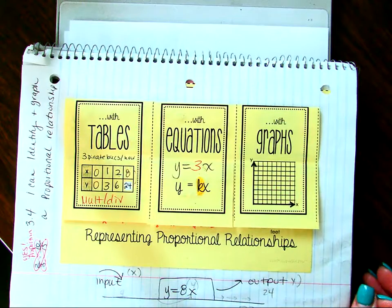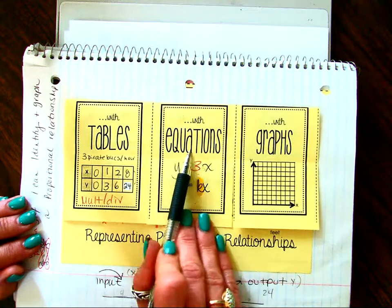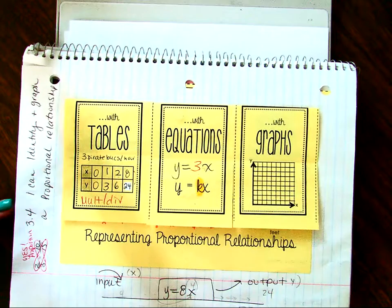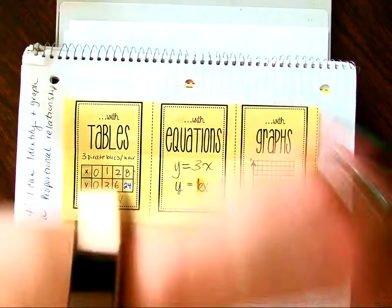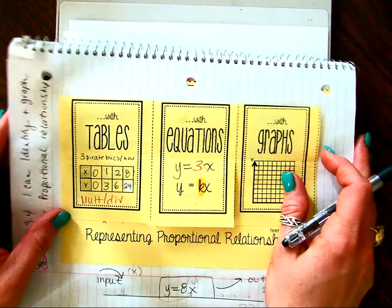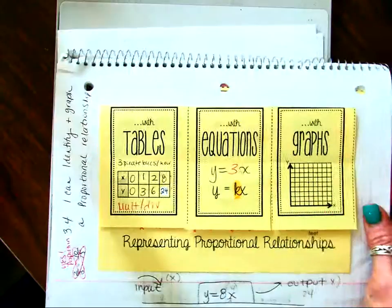In addition to a table and an equation and a graph, I'm going to add words. So a table, an equation, a graph, and words, those are the three things I want you to understand. So here's kind of the cool part.